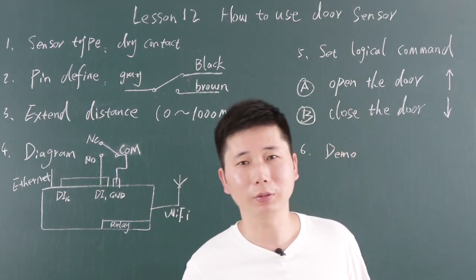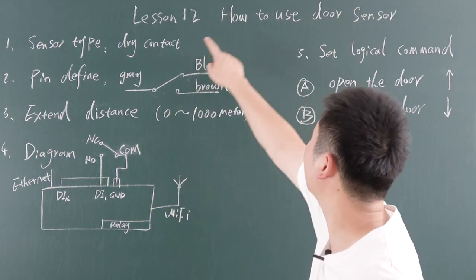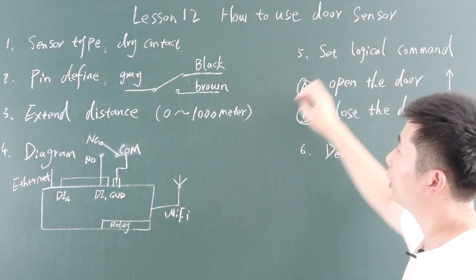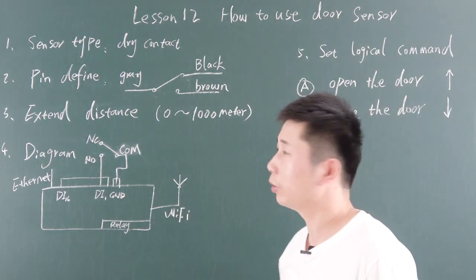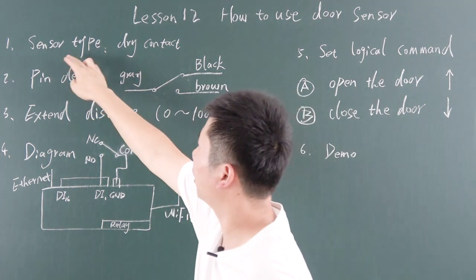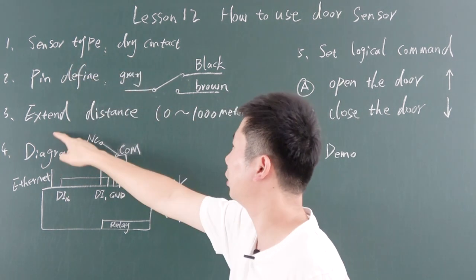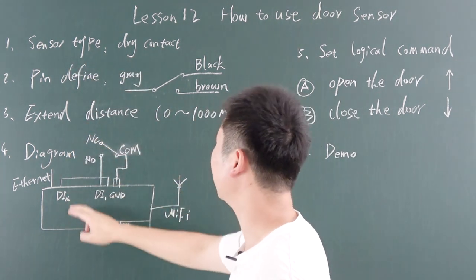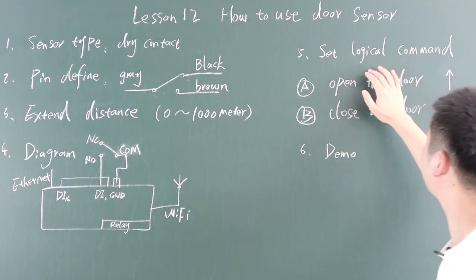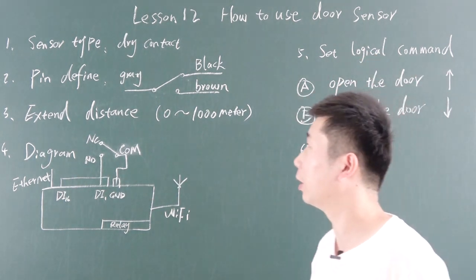Hello everyone. This is Kinkong IoT lessons, lesson 12. We will look at how to use the door sensor, and we will go through the six steps: the sensor type, the pin define, the extended distance, the diagram, the sensor logic command, and a demonstration on the PC software.